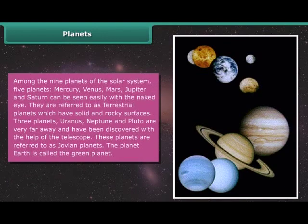Among the nine planets of the Solar System, five planets Mercury, Venus, Mars, Jupiter and Saturn can be seen easily with the naked eye. They are referred to as terrestrial planets which have solid and rocky surfaces. Three planets Uranus, Neptune and Pluto are very far away and have been discovered with the help of the telescope. These planets are referred to as Jovian planets. The planet Earth is called the Green Planet.